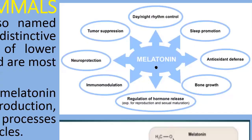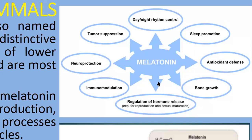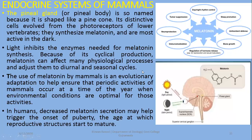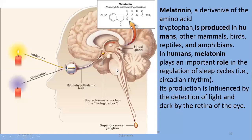Melatonin regulates many other activities as you can see in this flow chart: sleep promotion, day-night rhythm control, tumor suppression, neuroprotection, immunomodulation, regulation of hormone release, bone growth, and antioxidant defense. These are some of the functions known to be related to melatonin. Again, relate it to biological rhythm and the cyclic rhythm.